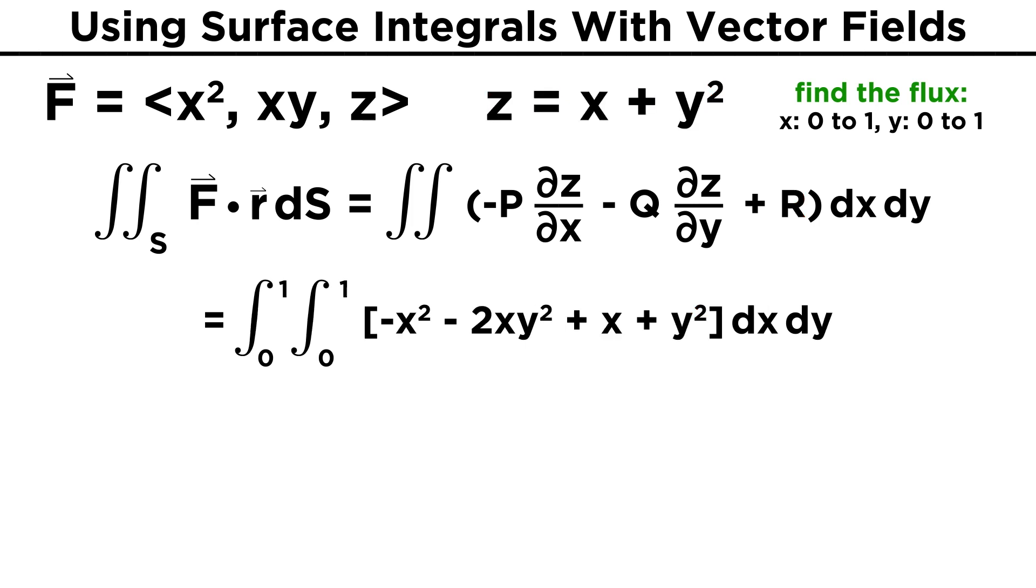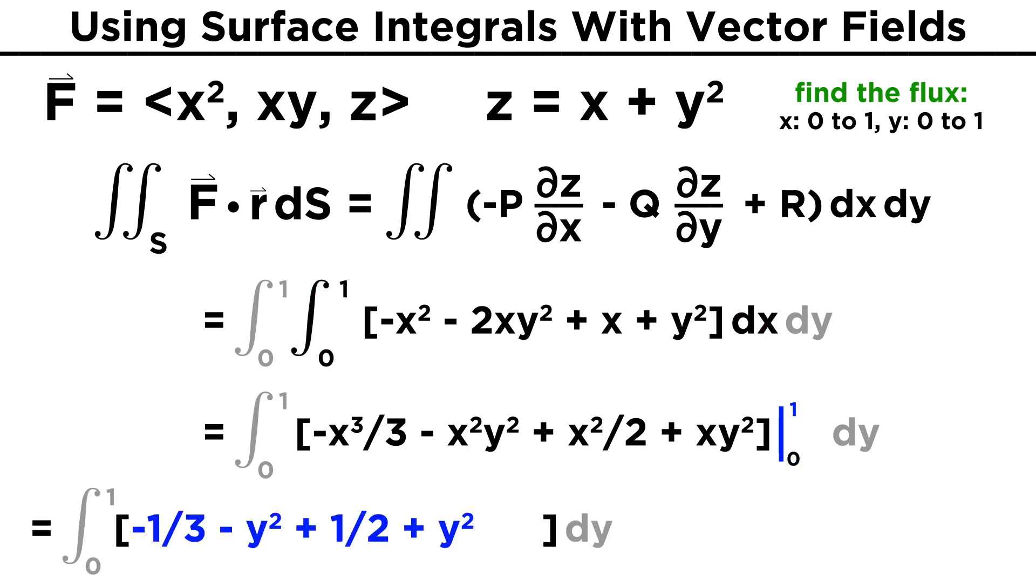Plugging all this in, we get the double integral of negative X squared minus two X Y squared plus X plus Y squared dx dY, where both X and Y range from zero to one. Evaluating the X integral first, we get the antiderivative negative X cubed over three minus X squared Y squared plus X squared over two plus X Y squared, where X runs from zero to one. Evaluating at X equals one gives negative one third minus Y squared plus one half plus Y squared, while evaluating at zero will just give zero.